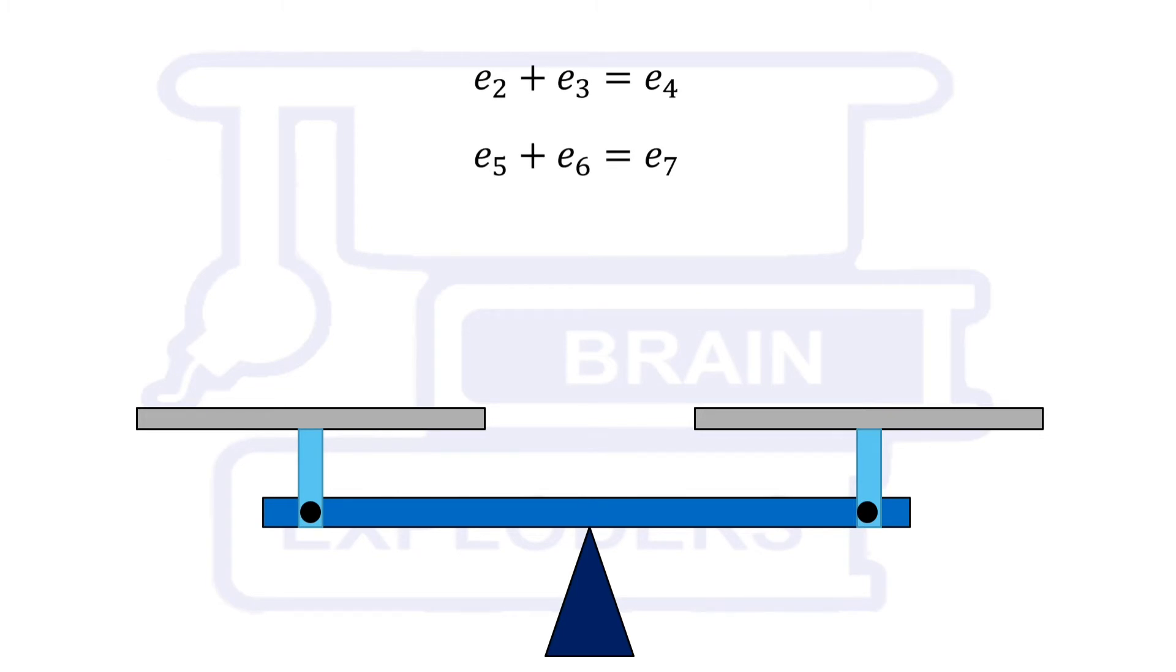In such condition if we take second and third elephant on left side and e4 on right side then the balanced scale does not bend to either side. With these elephants if we take fifth, sixth and seventh elephant also even then weights on both sides are equal.